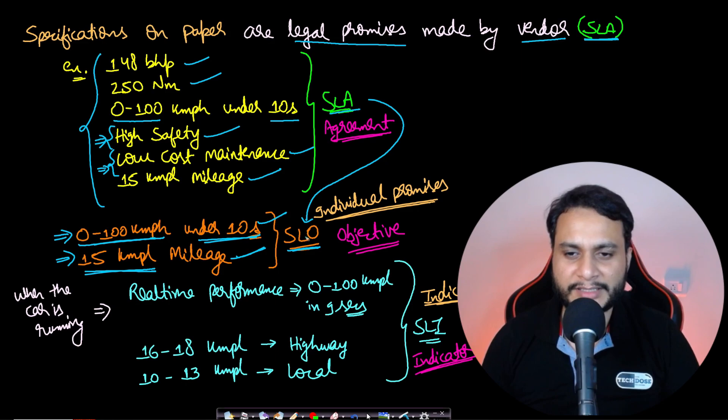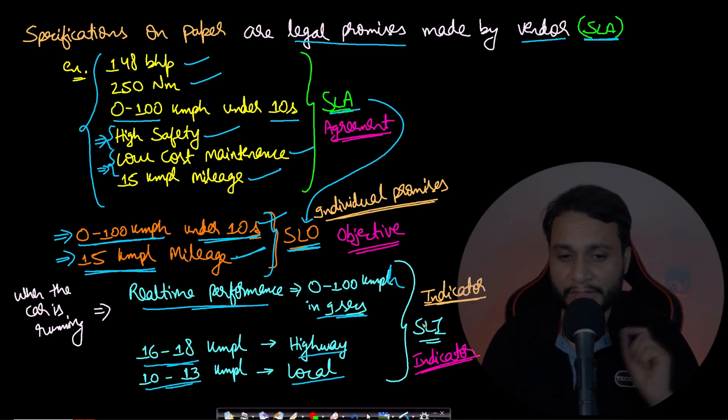Now from the promises which was made in the service level objective, let's say we have bought the car seeing the agreement and seeing all the promises made by the salesperson. We will now be driving the car and we see the real-time performance to be 0 to 100 kmph in just 9 seconds, and it is giving us 16 to 18 kmpl in highway and then 10 to 13 kmpl on local drive.